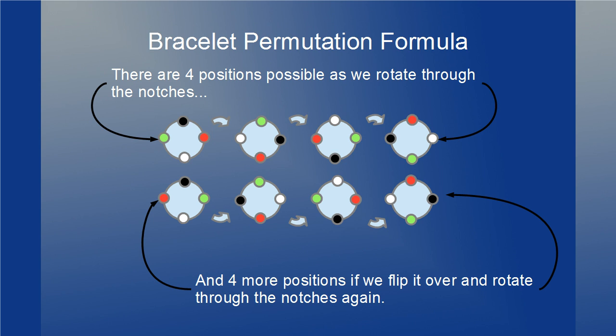Then if we flip the bracelet over, there are another n positions, for a total of 2n. If all the beads are different, we'll get a different arrangement of beads for all 2n positions. Just pick two adjacent beads as references — they'll be in different positions for each rotation so no two rotations will be the same. Then when you flip it over, the two beads will reverse direction, so all of the flipped rotations will be different from the non-flipped. That means for any arrangement of the beads, you can put it in a set with 2n distinct arrangements that can't be distinguished when flips and rotations are allowed.